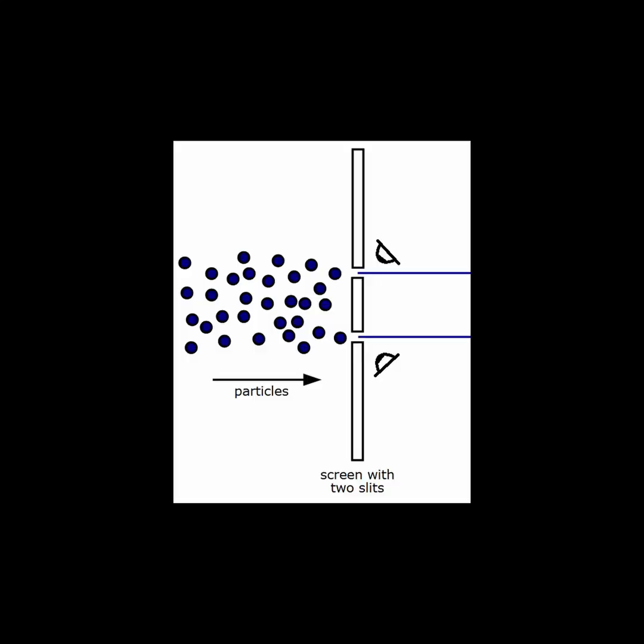We can conduct another experiment. In this case, let's make an observation of the light at the point where it passes through one slit or the other to report back to us which path the light took prior to hitting the screen.